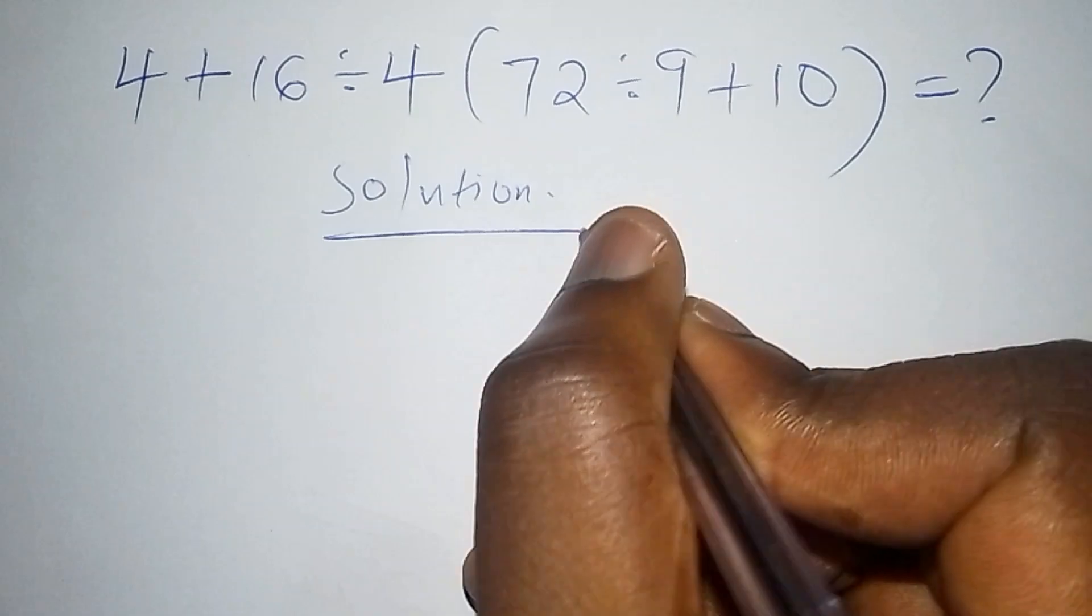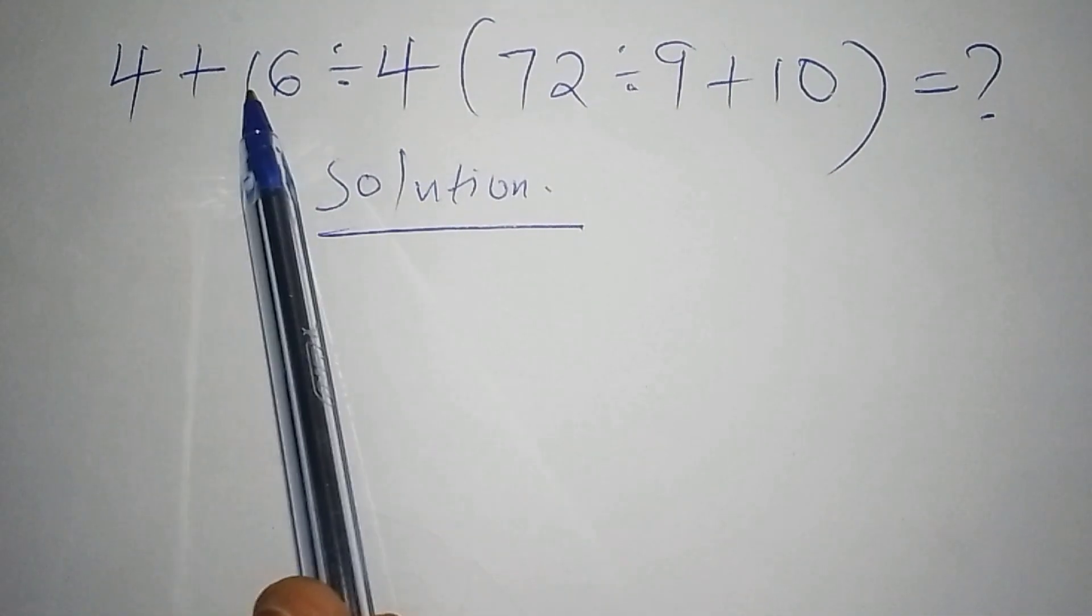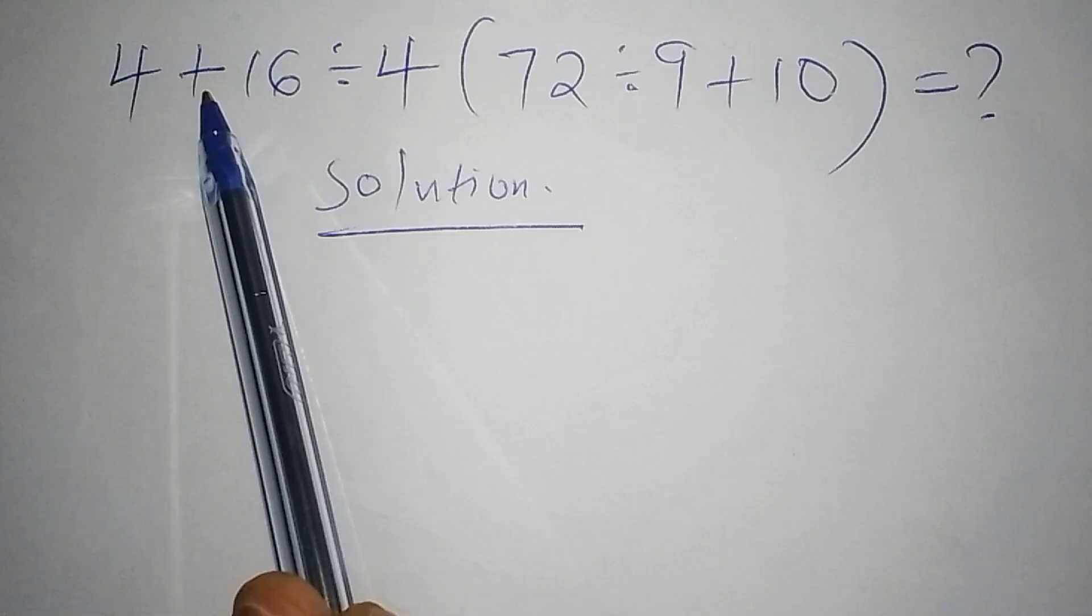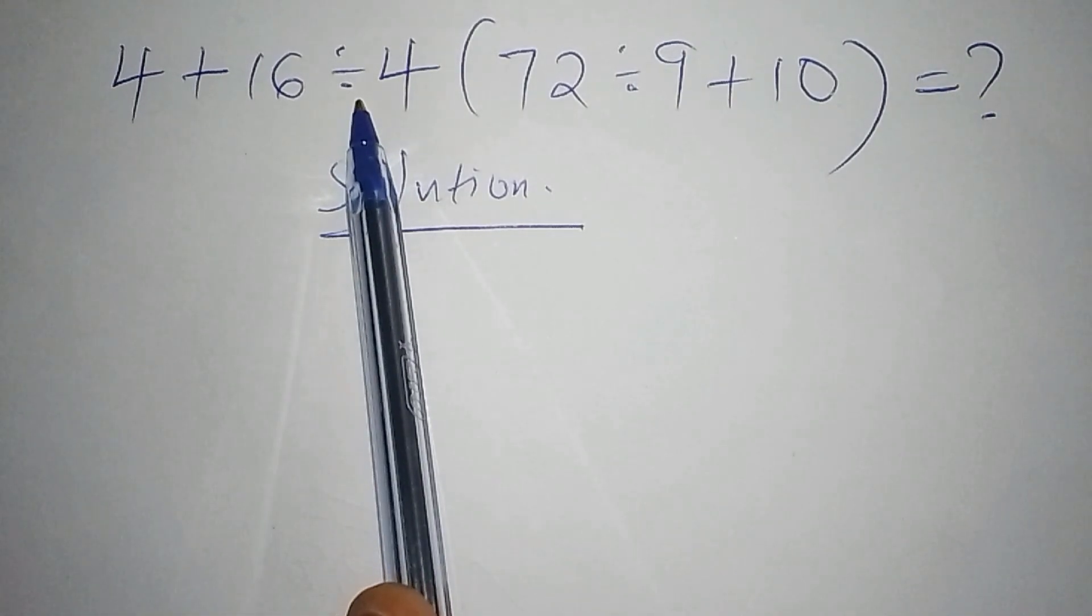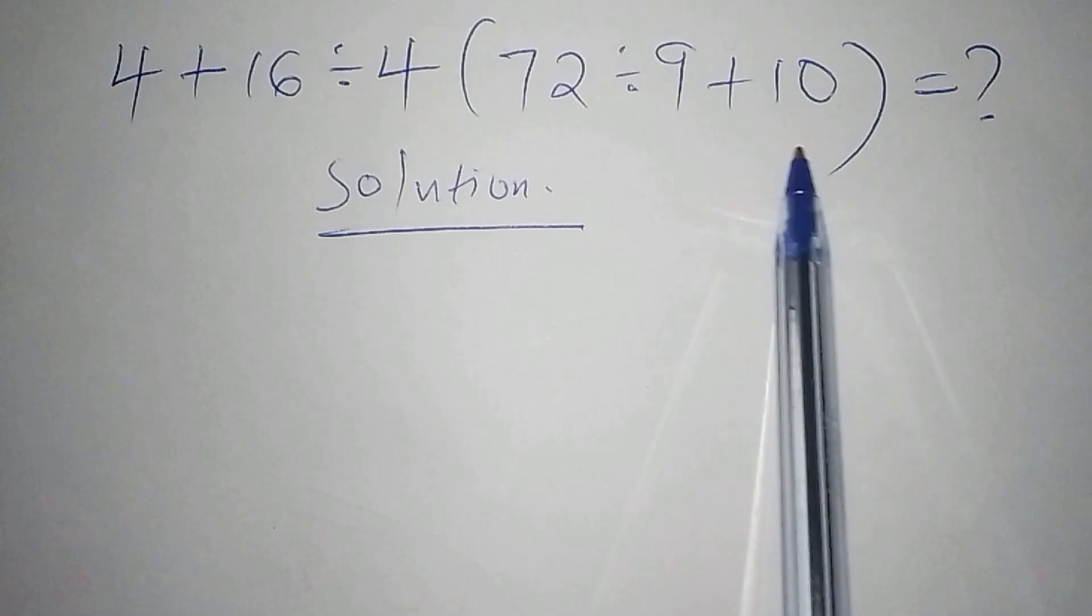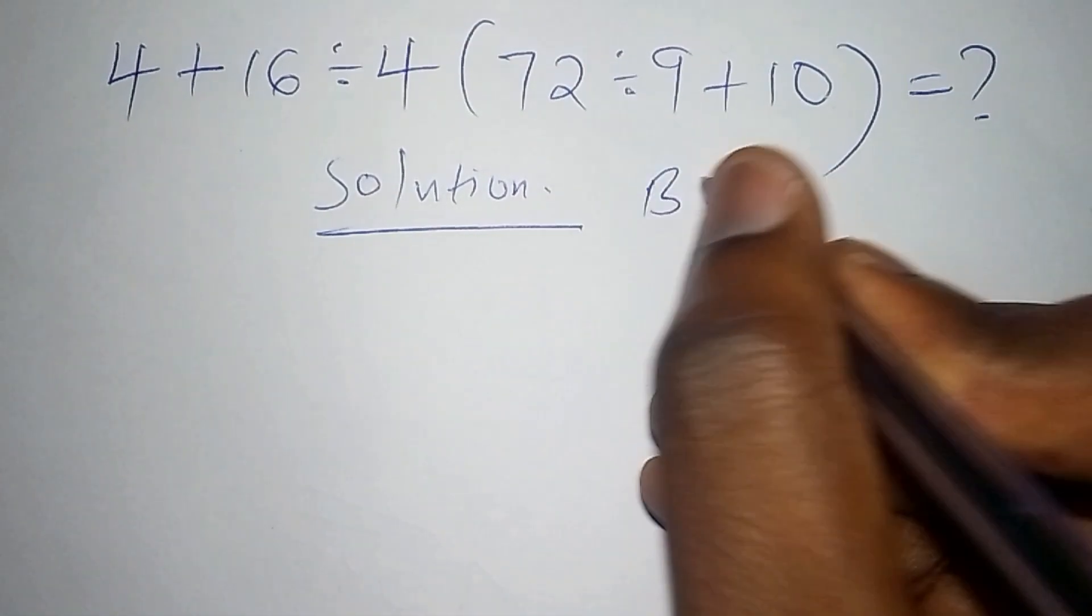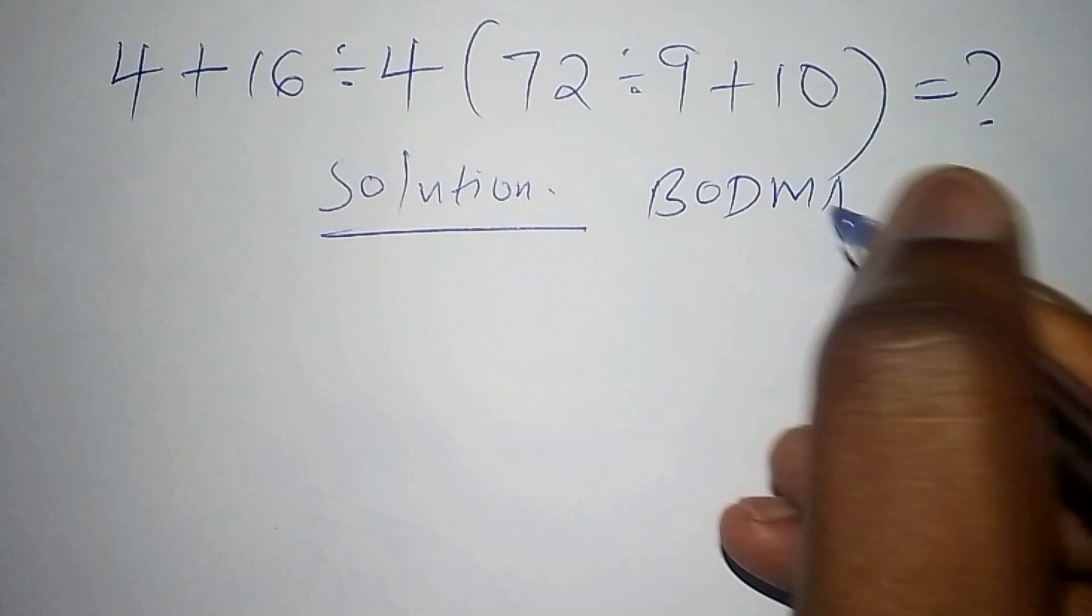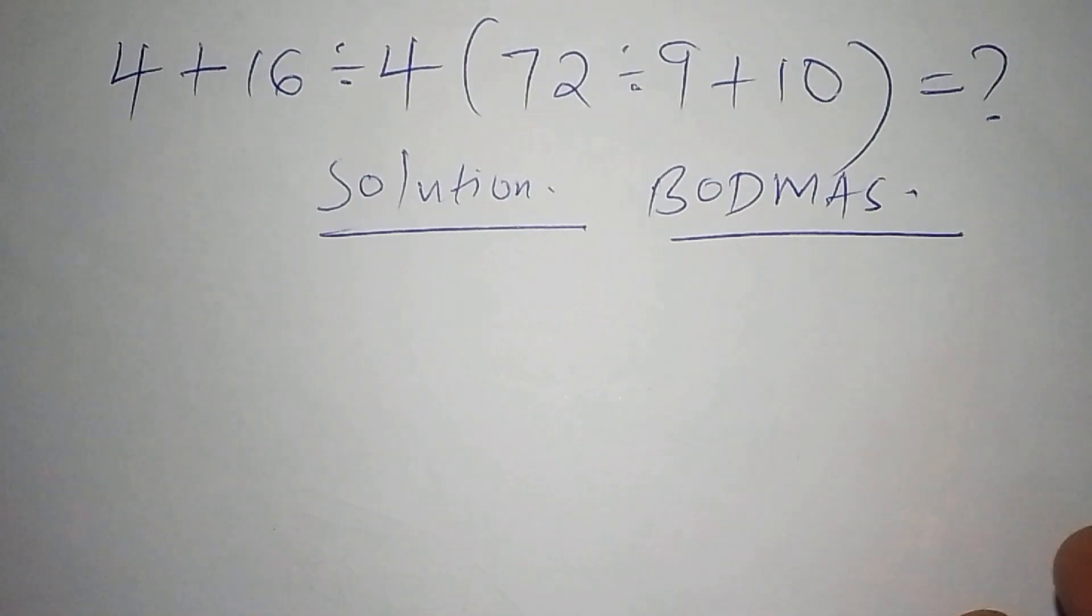We cannot add 4 plus 16 first because we have to work out the addition first, then from there work out the bracket. This is what will guide us: BODMAS. BODMAS will always guide you when working out combined operations. B stands for bracket, so make sure you work out the number inside the bracket.